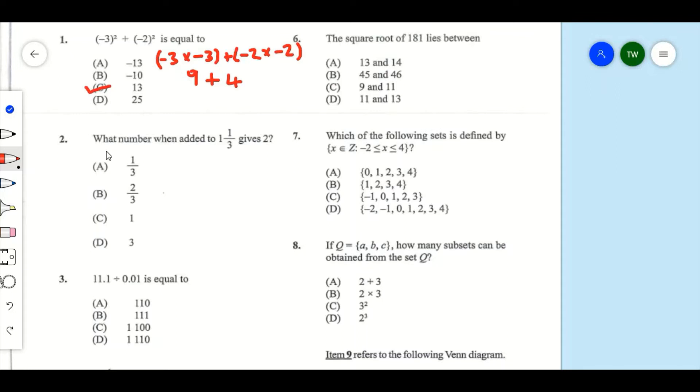Number 2: What number when added to 1⅓ gives 2? Now 1⅓ means 1 plus ⅓. What can we add to 1⅓ that will give us 2? We can add ⅔. Now you see that ⅔ + ⅓ is 1, plus 1 more gives us 2. So our answer for number 2 is B, which is ⅔.